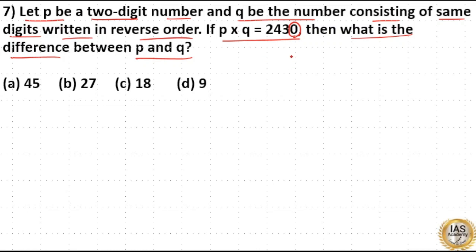then the other number should be an even number because 5×an even number leads to 0 here. So if I take P as x5, then Q is 5x.